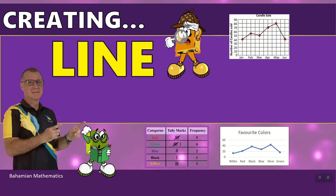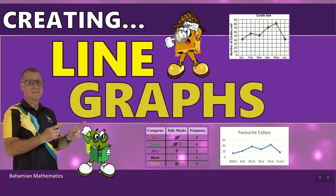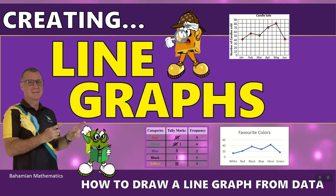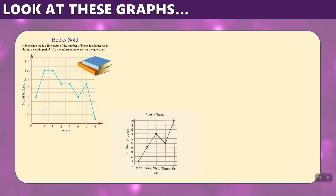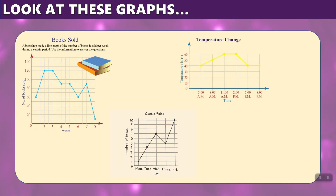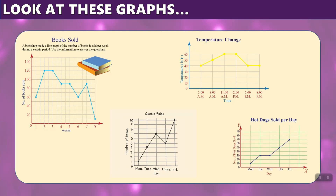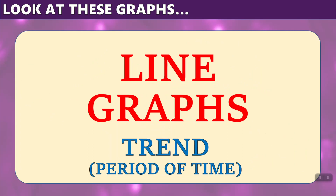Welcome back to Bohemian Mathematics. Today we will look at line graphs and how to draw a line graph from a set of data. First, let's look at a few graphs. This is a graph showing books sold over several weeks. Here's a graph showing cookie sales throughout the week. Here is a graph of temperature change over a period of time. And here is a graph of hot dogs sold per day. All of these are known as line graphs.